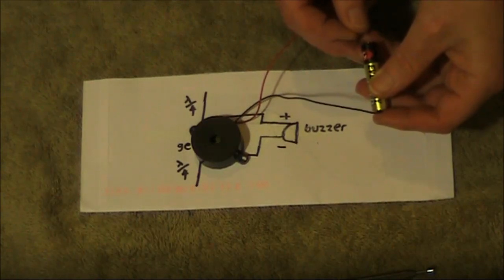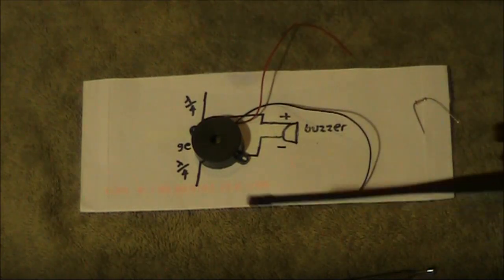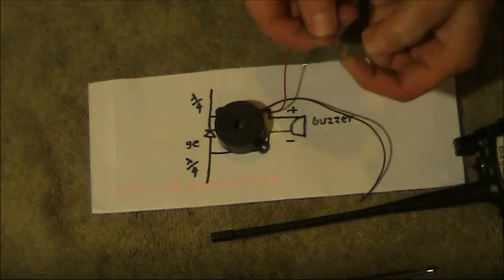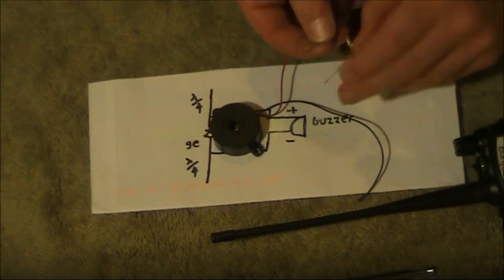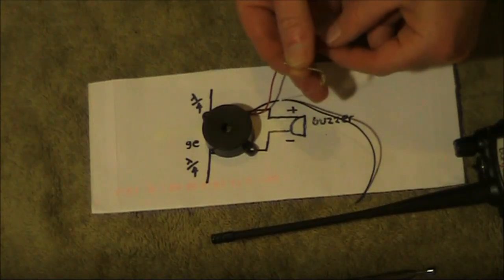First thing we'll do, just to demonstrate that it works, is to put the diode across the buzzer. The stripe of the diode needs to go to the positive or red lead of the buzzer.